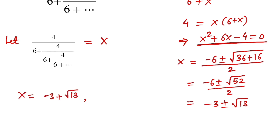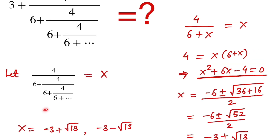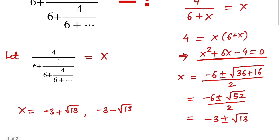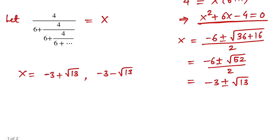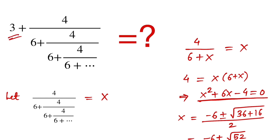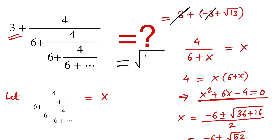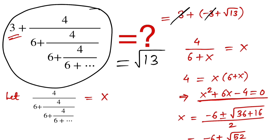So x equals −3 + √13 or −3 − √13. Since we are adding all positive numbers, x cannot be negative, so we discard the negative root. Therefore x = −3 + √13. Adding back the 3 gives us 3 + (−3 + √13) = √13. So this continued fraction equals √13. I hope you liked the video, thank you for watching.